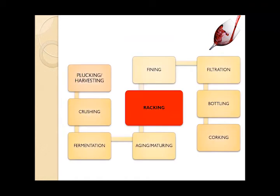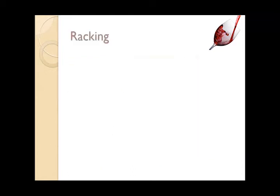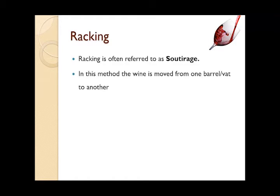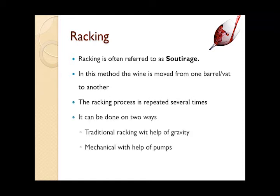After aging, the next step is racking. Racking is often referred to as a softer age. In this method, the wine is moved from one barrel to another barrel, and the racking process is repeated several times. It can be done in two ways: traditionally by gravity, or mechanically with the help of pumps. It helps to clarify the wine.